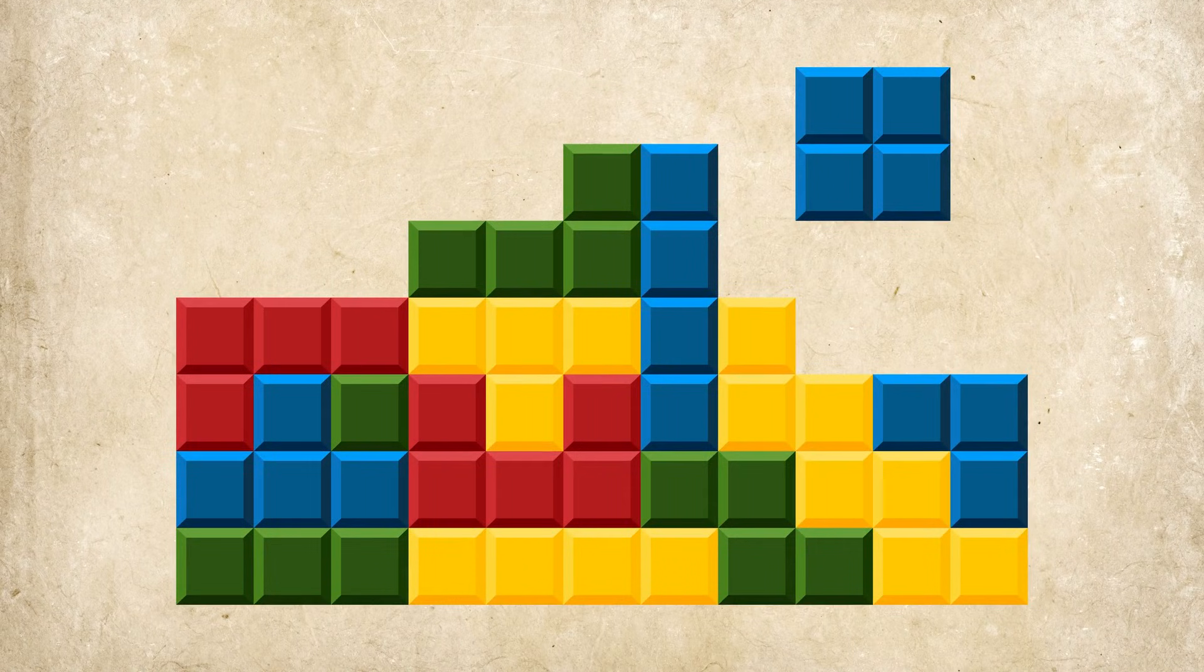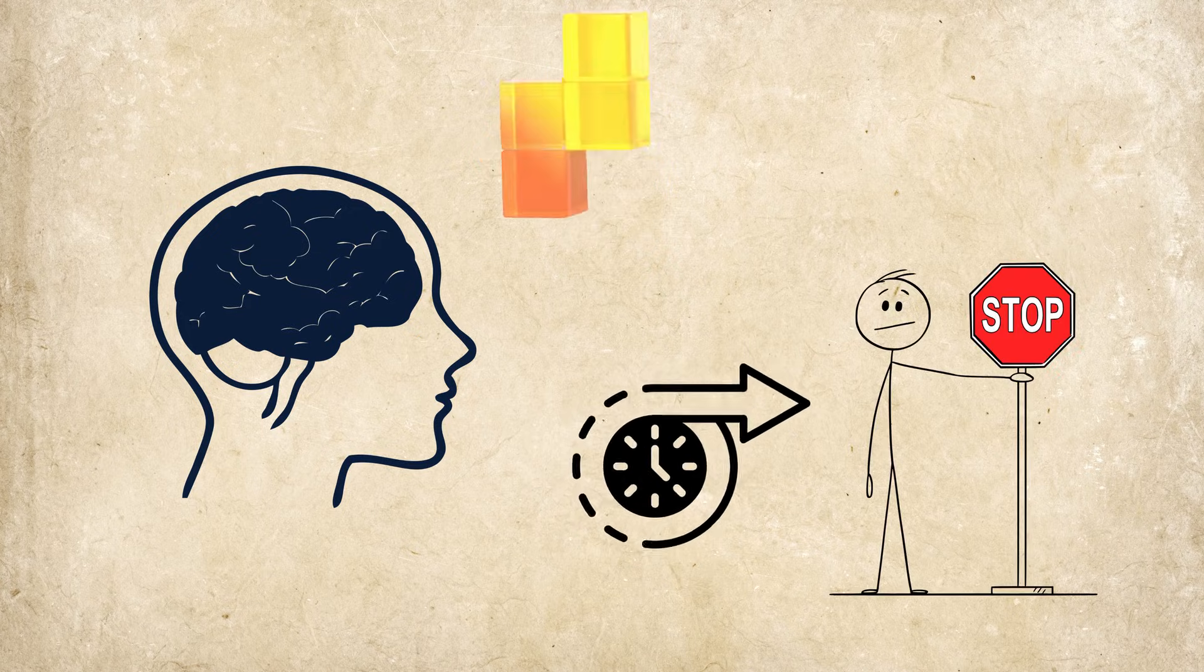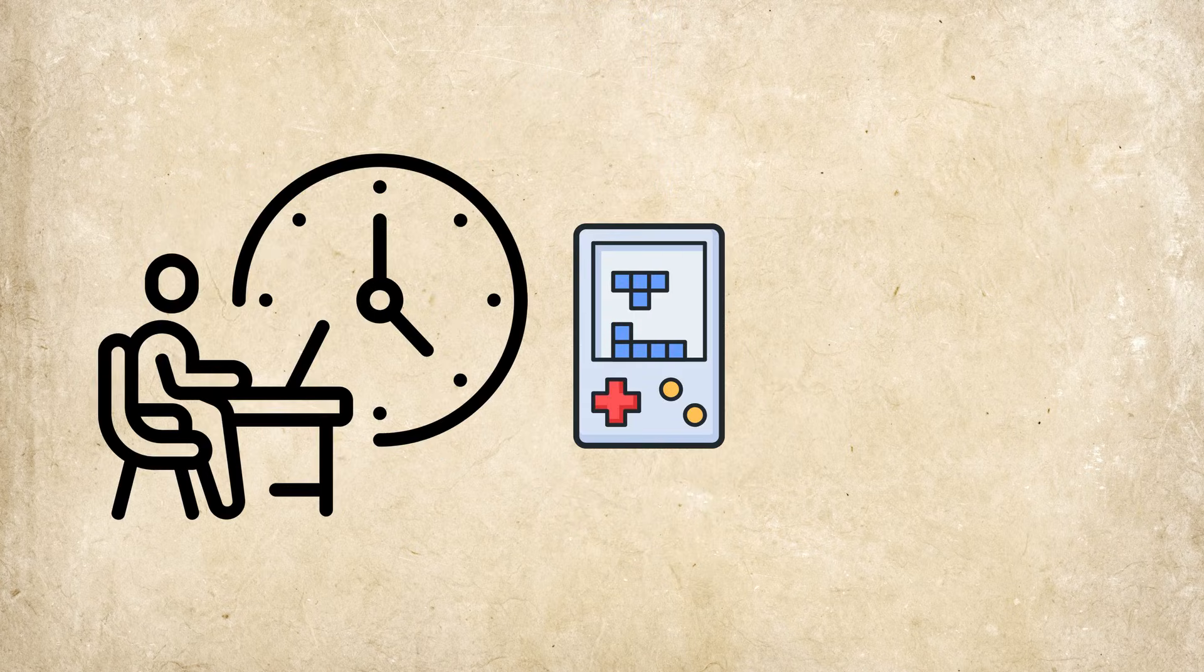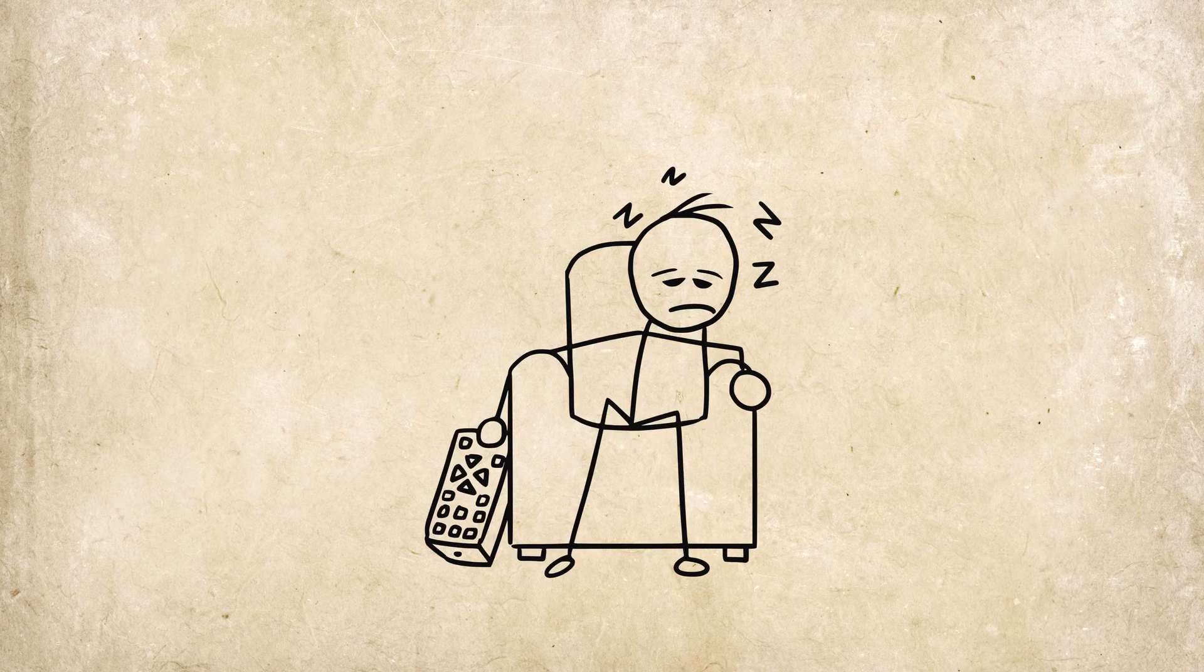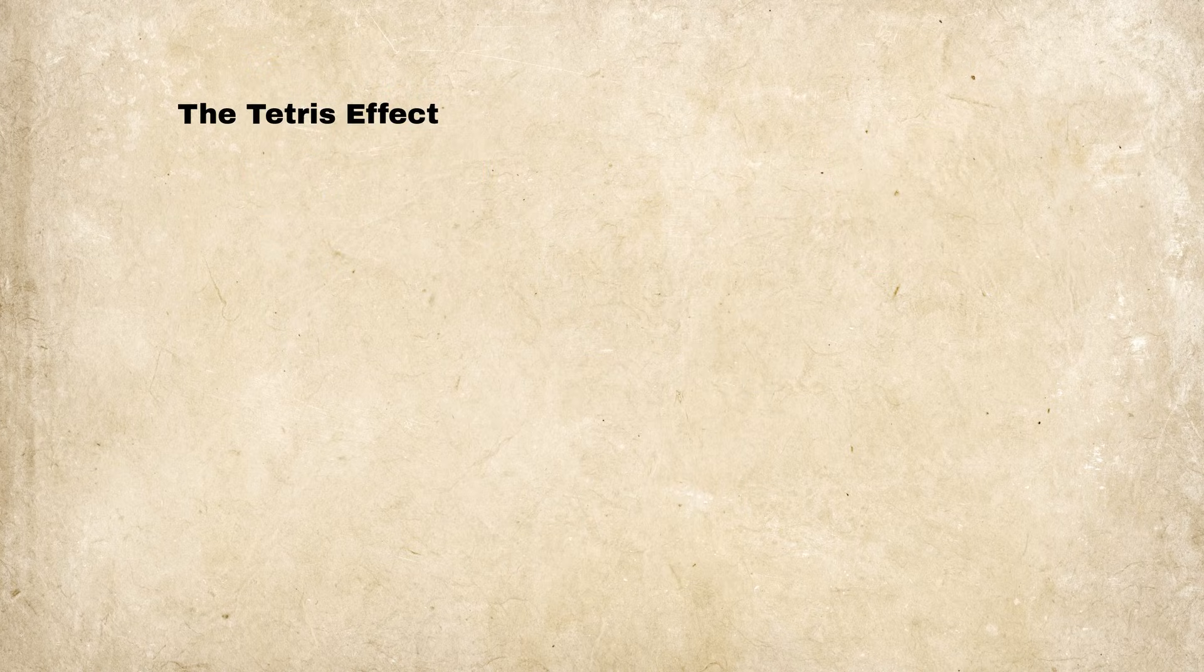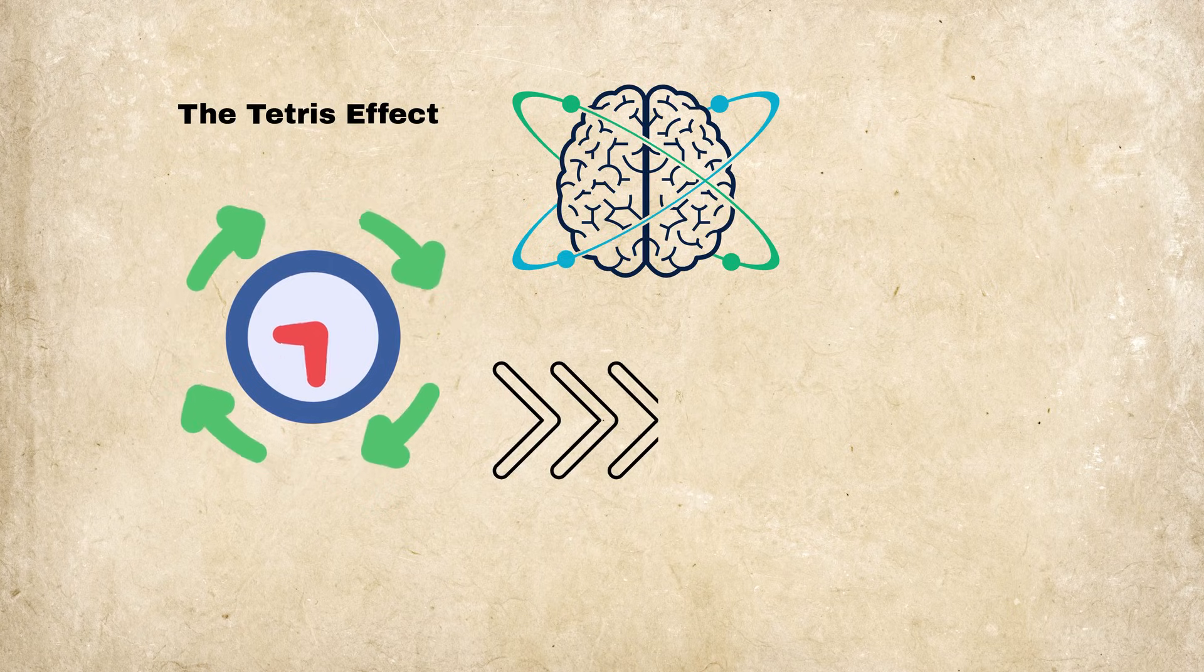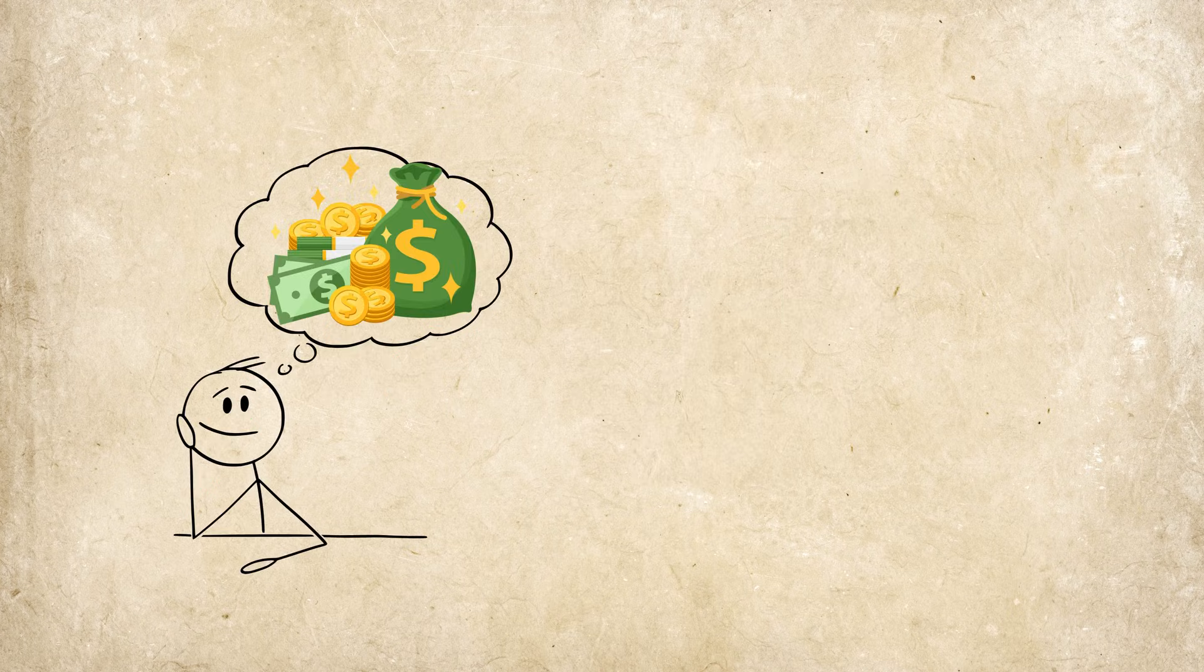The Tetris Effect. What if your brain kept playing a game long after you stopped? You spend hours playing Tetris or organizing your desk, then close your eyes only to keep seeing falling blocks or matching tiles stretching across your vision. The Tetris Effect happens when repetitive tasks get so ingrained in your brain that the simulation continues even after you stop. Sometimes it helps master skills, other times it turns your dreams into a never-ending level.